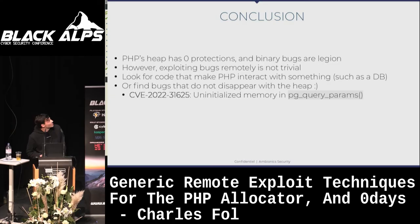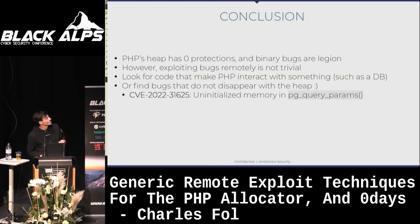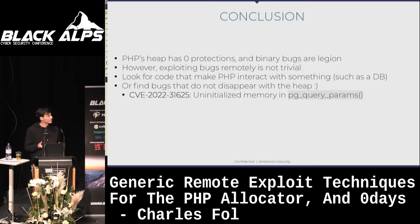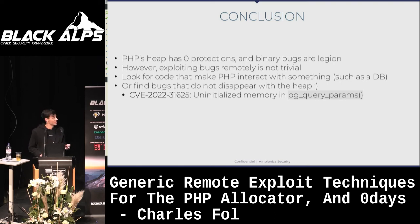Quick conclusion before the other bug: PHP has no protections, but finding a bug to exploit remotely requires a lot — you need the bug, a CMS that uses it, and the ability to use it afterwards. My advice: if you want to find remotely exploitable bugs, look into unserialize — maybe there are still bugs there — or look at things that make PHP interact several times with anything: database, file protocols. You could also find bugs that do not disappear with the heap.